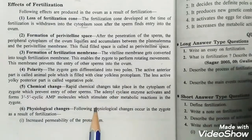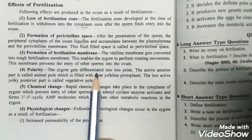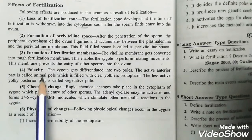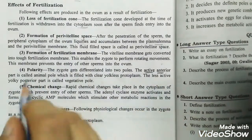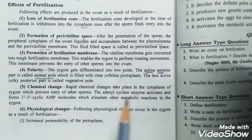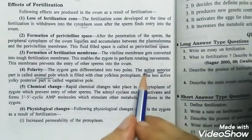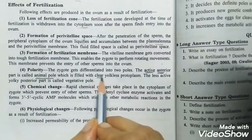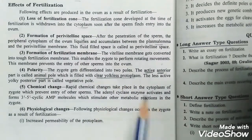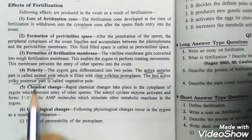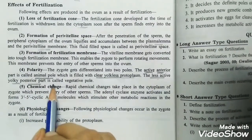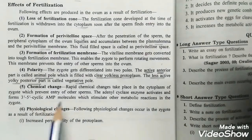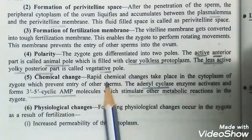Next is polarity. The zygote gets differentiated into two poles. The active anterior part is called the animal pole — all three words start with 'a': active, anterior, animal pole. It is filled with clear yolkless protoplasm. The other part is the less active, yolky posterior part, known as the vegetative pole.